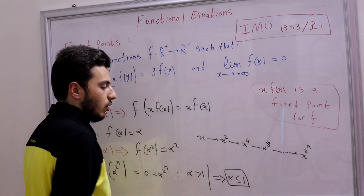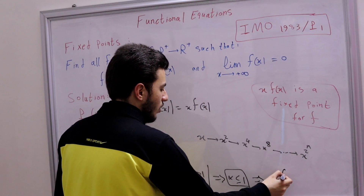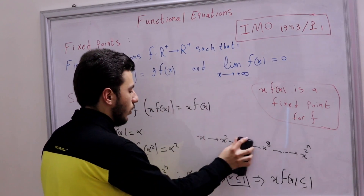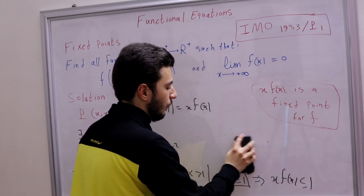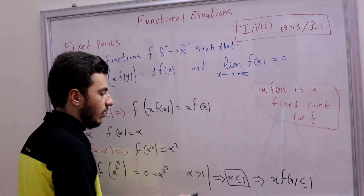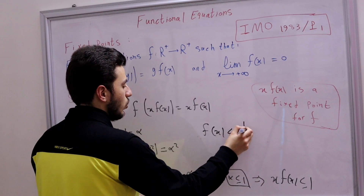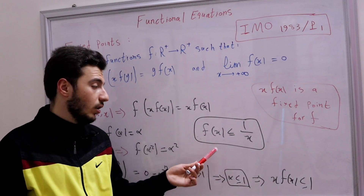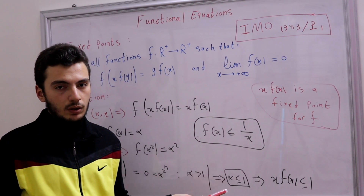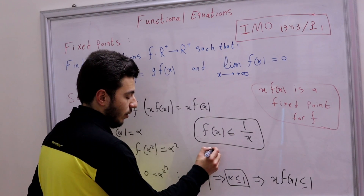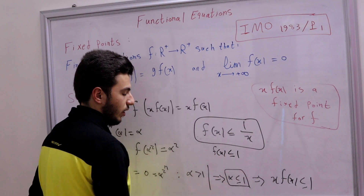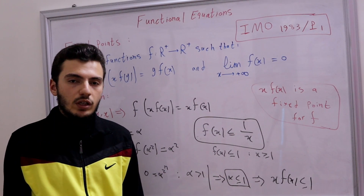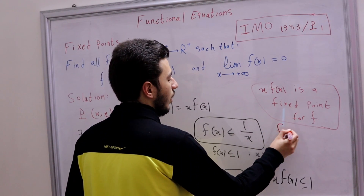Since x·f(x) is a fixed point, it must be ≤ 1, meaning f(x) ≤ 1/x. For x > 1, this means f(x) < 1. So f(x) ≤ 1 for all x > 1, which means f is decreasing.